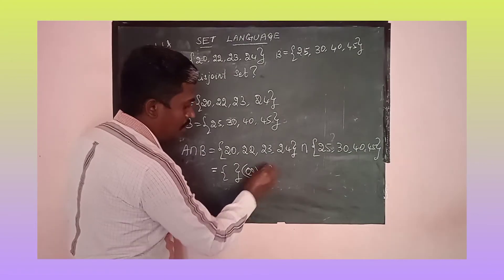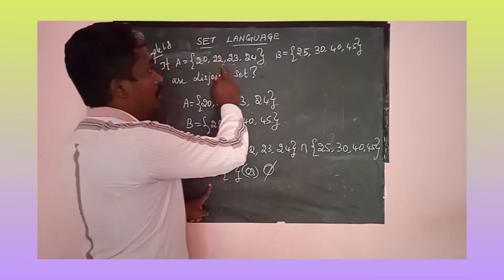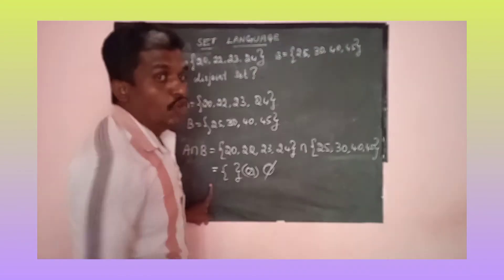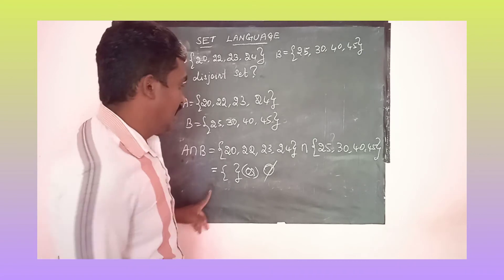Or use the symbol. If there is an empty set, the given two sets are disjoint sets.